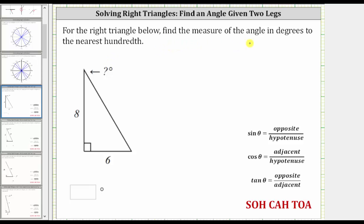For the right triangle below, find the measure of the angle in degrees to the nearest hundredth. Our goal is to find the measure of this angle here. Let's call this angle theta.